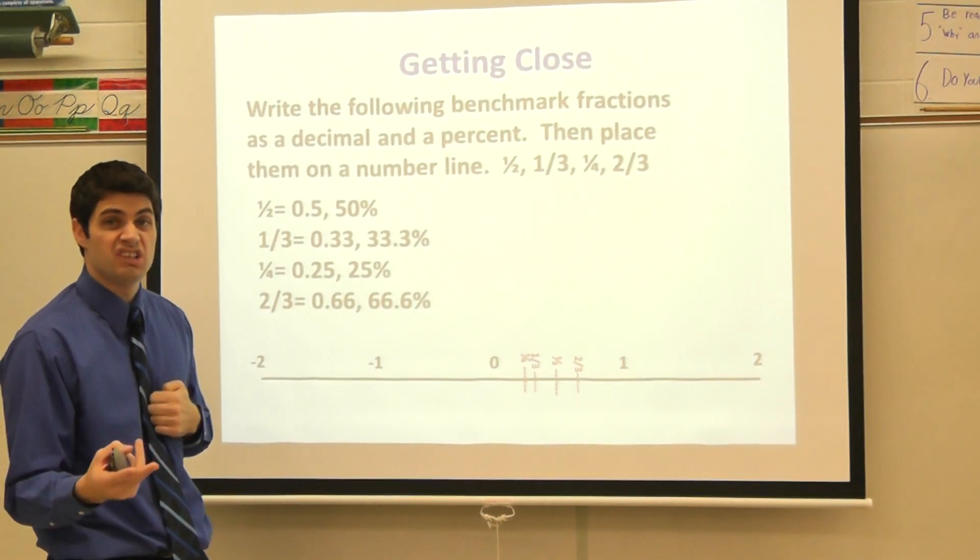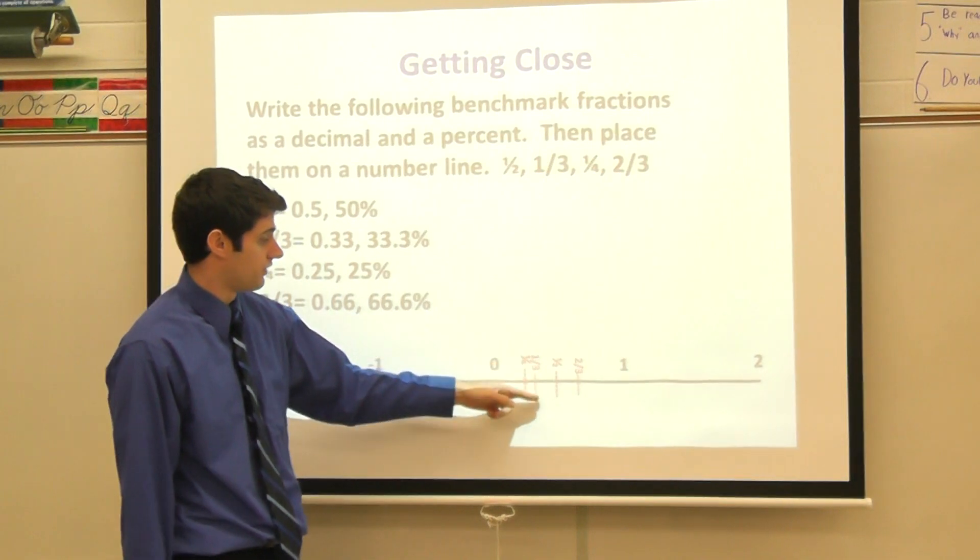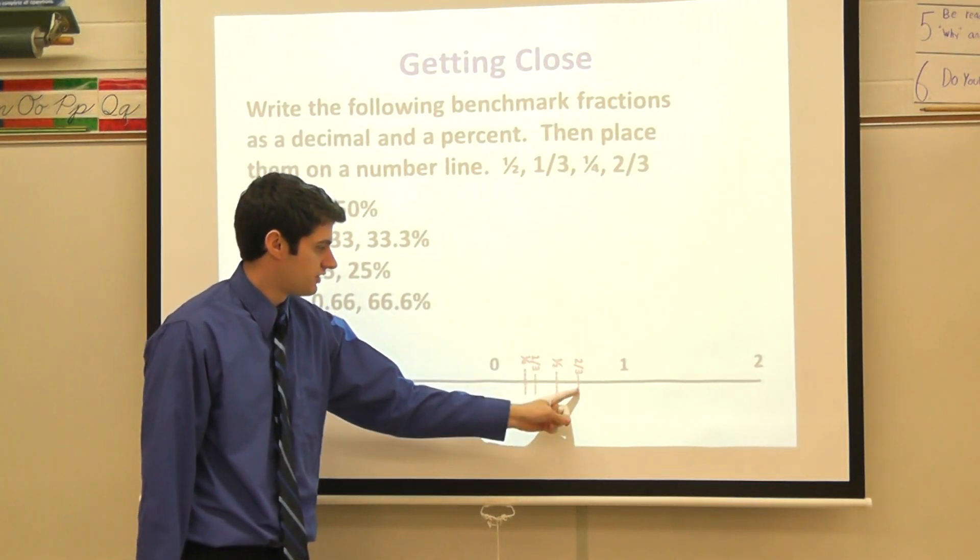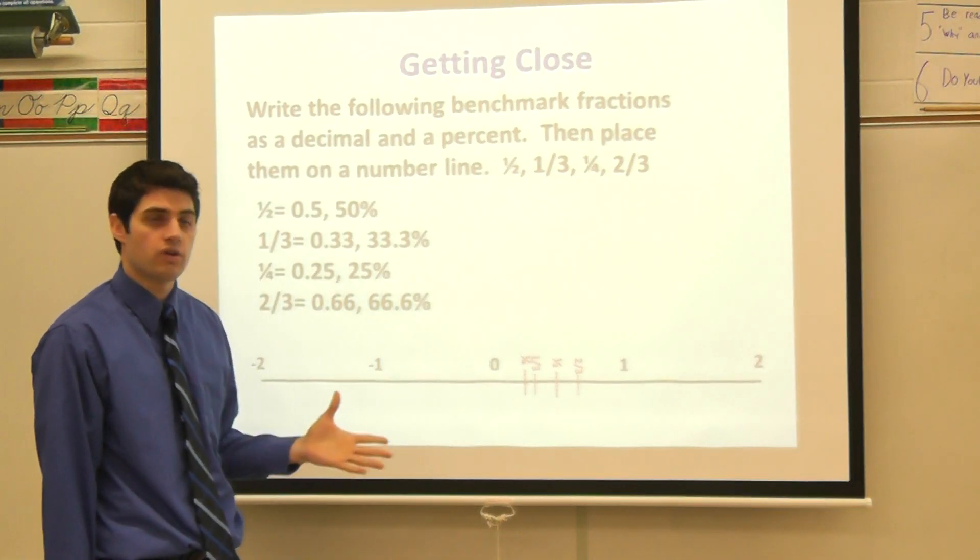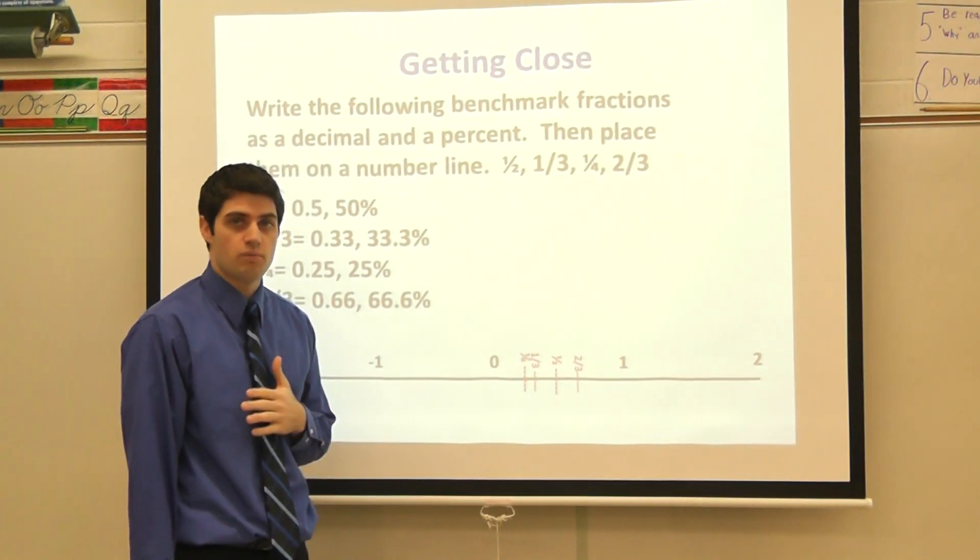And then lastly, two-thirds. Well, it's kind of handy because we've already done one-third here. If this is one-third there, there's about two-thirds. Three-thirds would be my whole. I'm breaking up my whole here into three equal parts.